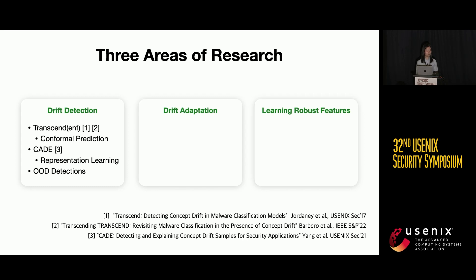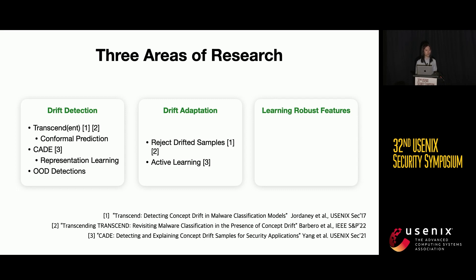There are also many other detection schemes in the machine learning community; however, they have not been tested on security data, so we don't know how well they perform. In drift adaptation, we can do two things: after detecting drifted samples, we can reject them so the classifier only predicts samples we think have not drifted. Or we can ask a human analyst to label these drifted samples, expand the training set, and retrain the classifier to be more robust against future samples.